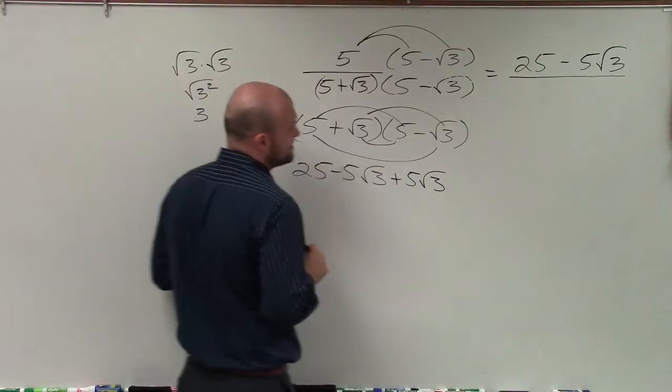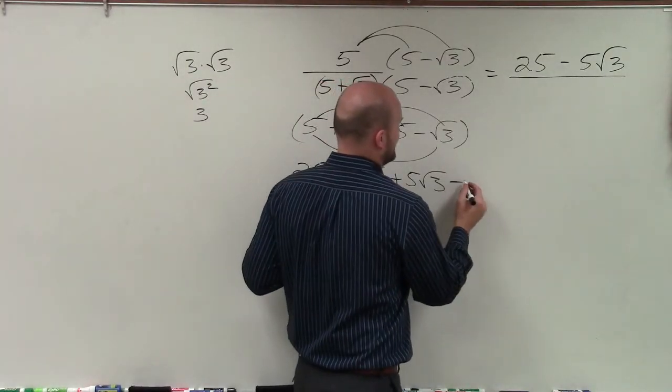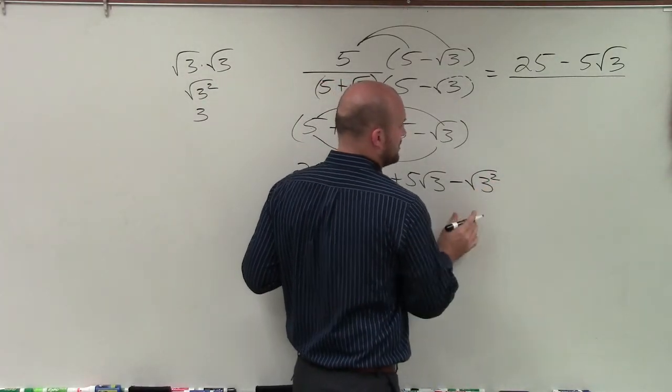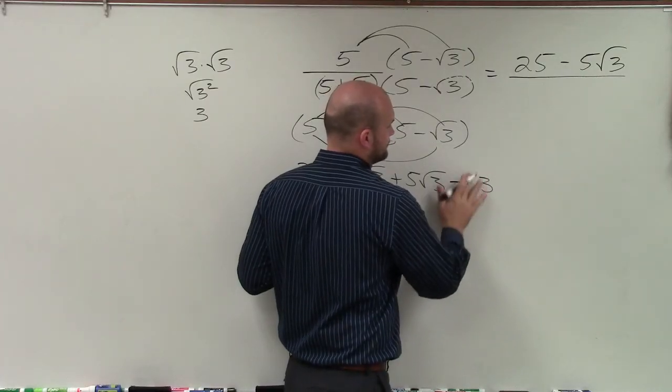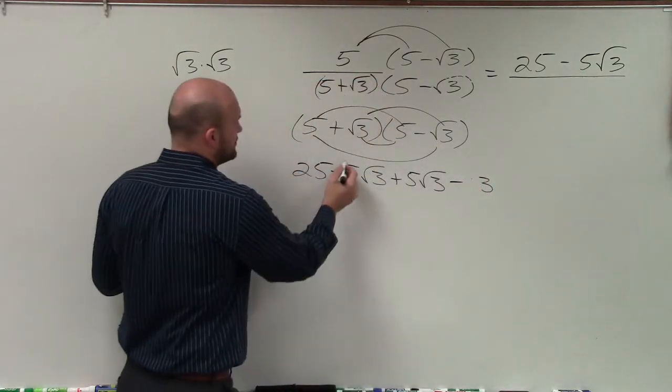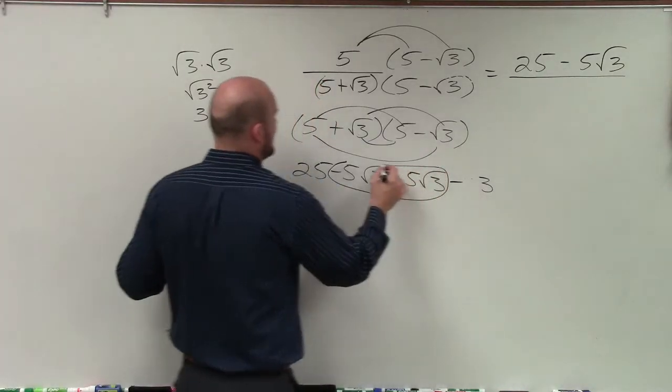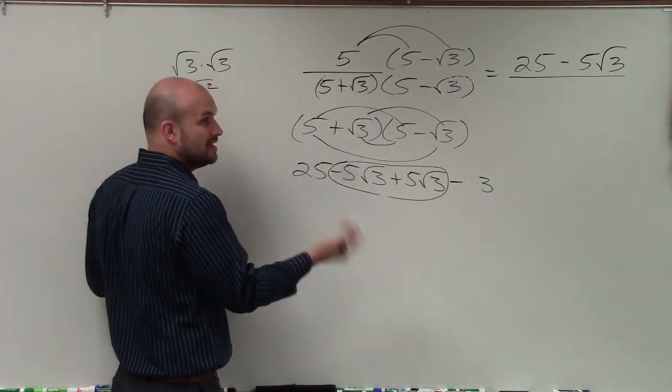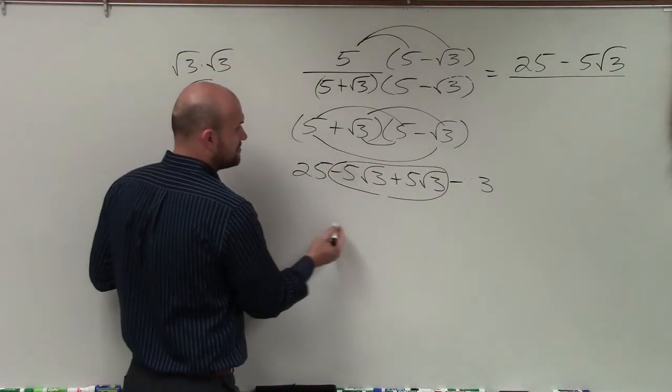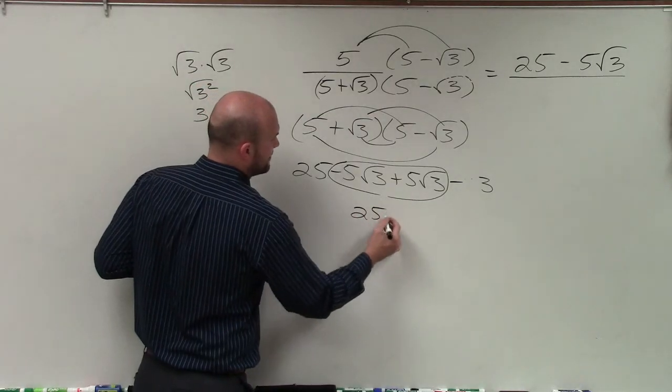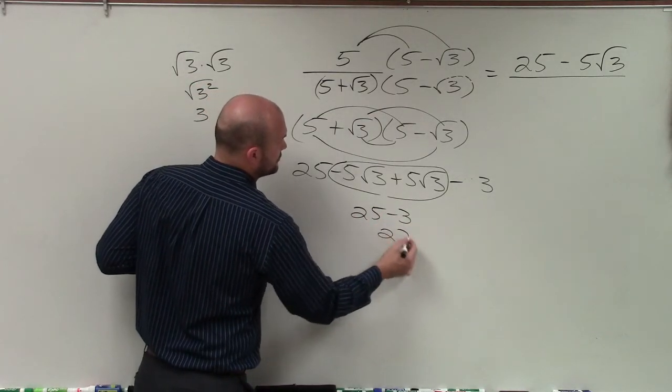And √3 times negative √3 is negative √3 squared, which equals negative 3. All right, so now you notice that negative 5√3 and positive 5√3 add up to 0. So I'm basically just left with 25 - 3, which equals 22.